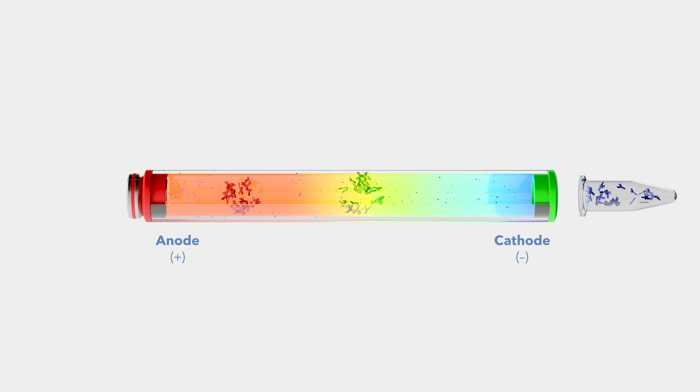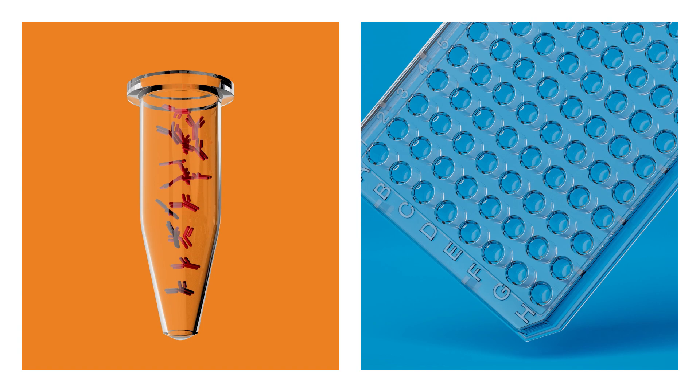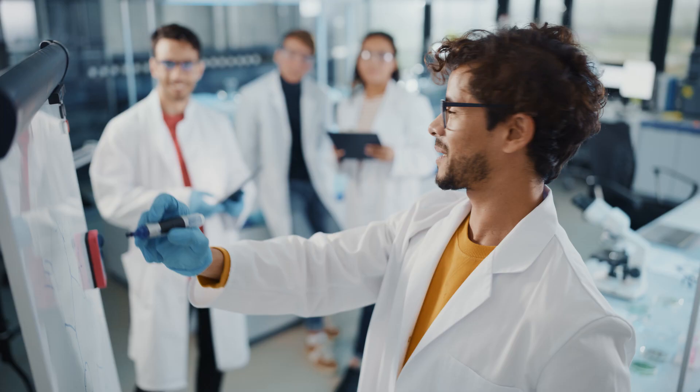The protein fractions are then eluted out of the capillary one by one and dispensed into the wells of a 96-well plate. From there, the fractions can be collected or pooled to give you high-purity charge variant fractions for further analysis.